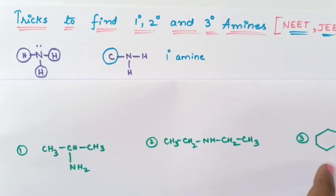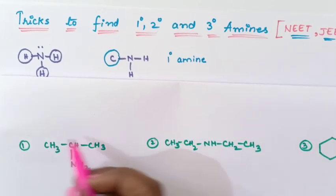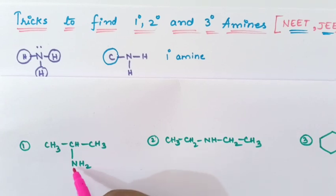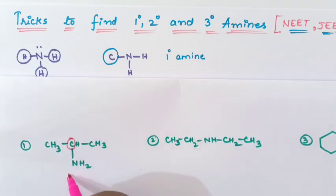So this is the first example you can see here. So here you have to check whether this is primary, secondary or tertiary amine. You should check how many carbons nitrogen is connected to. Nitrogen is connected to 1 carbon. Therefore this is primary amine. Is that clear?